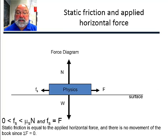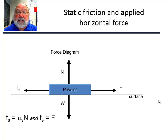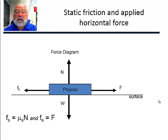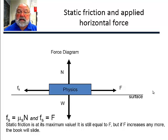We increased our force. Static friction is now equal to mu s times N — it's no longer less than mu s times N, it's now equal to it. We're at our maximum. So the static friction is equal to the applied force, it's at its maximum value. If we increase the push or pull anymore, the book is going to start to slide.